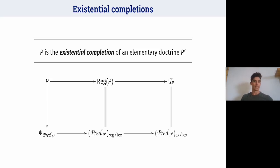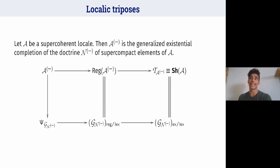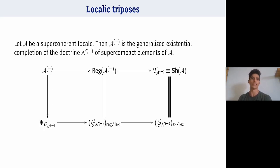I would like to conclude with some applications. The first is the case of localic triposes. If we consider a supercoherent locale, this is a generalized existential completion — specifically the generalized existential completion of the doctrine of supercompact elements of this locale. The regular completion of this localic tripose is equivalent to the regular completion of the Grothendieck category associated to the doctrine of supercompact elements, and the topos obtained by the triples-to-topos construction is equivalent to the exact completion of that Grothendieck category.